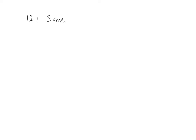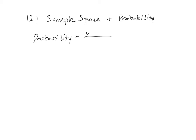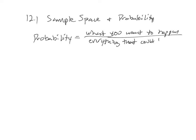All right, so last chapter — chapter 12. It's on probability. I don't think it's super crazy, but we'll see. Sample space and probability. So when we think about this, it doesn't have anything to do with any problems specifically, but I think it helps with just a general understanding. What do we mean by probability? It's what you want to happen over everything that could happen. If we keep that in mind as we move through this chapter, I think that will help.